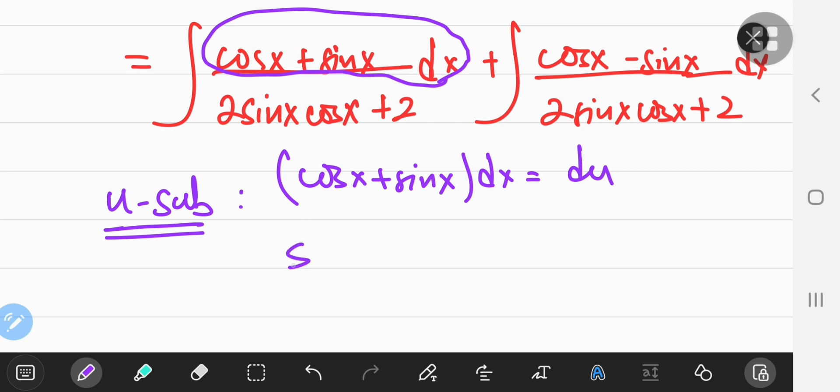So if you integrate cosine of x, you get sine x, and if you integrate sine x, you'll get the negative cos x. And if you integrate the differential of u, you're just going to get u.